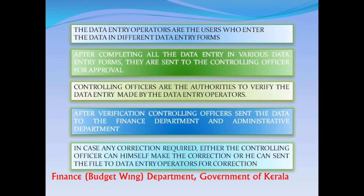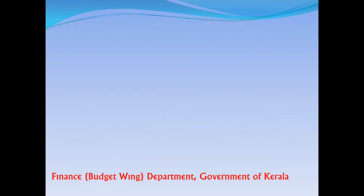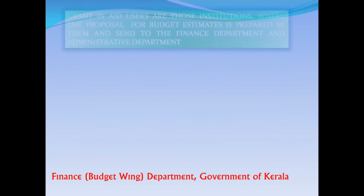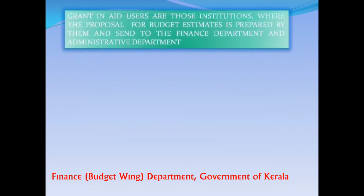In case any correction is required, either the Controlling Officer can himself make the correction or he can send the file to the Data Entry Operators for correction. Grant-in-aid users are those institutions where the proposal for budget estimates is prepared by them and sent to the Finance Department and Administrative Department.